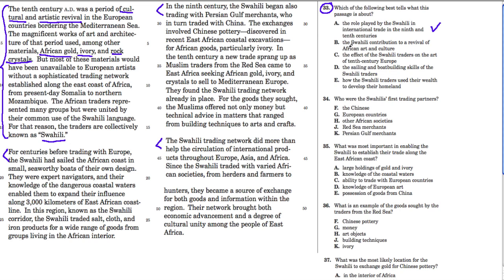B says 'the Swahili contribution to a revival of African art and culture' — that's tricky, because this article is really about taking African materials through trade to revive European culture, not African culture. C says 'the effect of Swahili traders on the art of 10th century Europe' — only partially true, because this trade was about much more than art; it was also about culture. D mentions sailing and boat-building skills, which are barely mentioned. So A is the choice I'm going to pick.